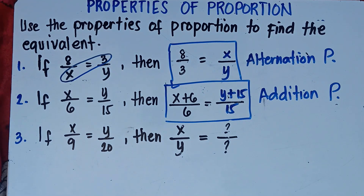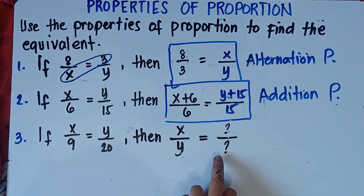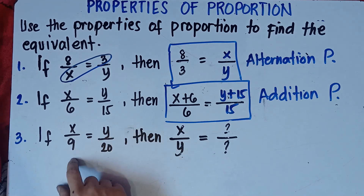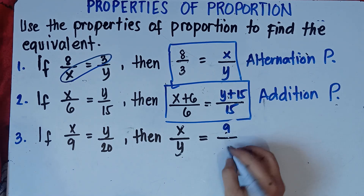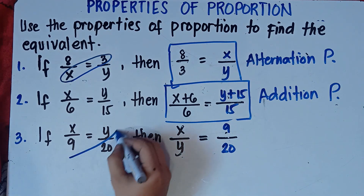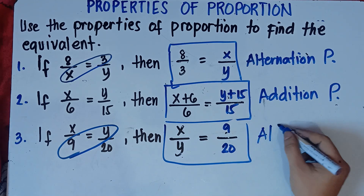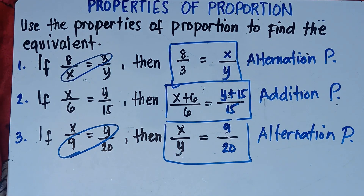Number 3: if x over 9 equals y over 20, then x over y equals blank over blank. Y becomes the denominator of x, so the means have been interchanged — same as number 1. We apply the alternation property. The answer is 9 over 20. We interchange the means and copy the extremes.